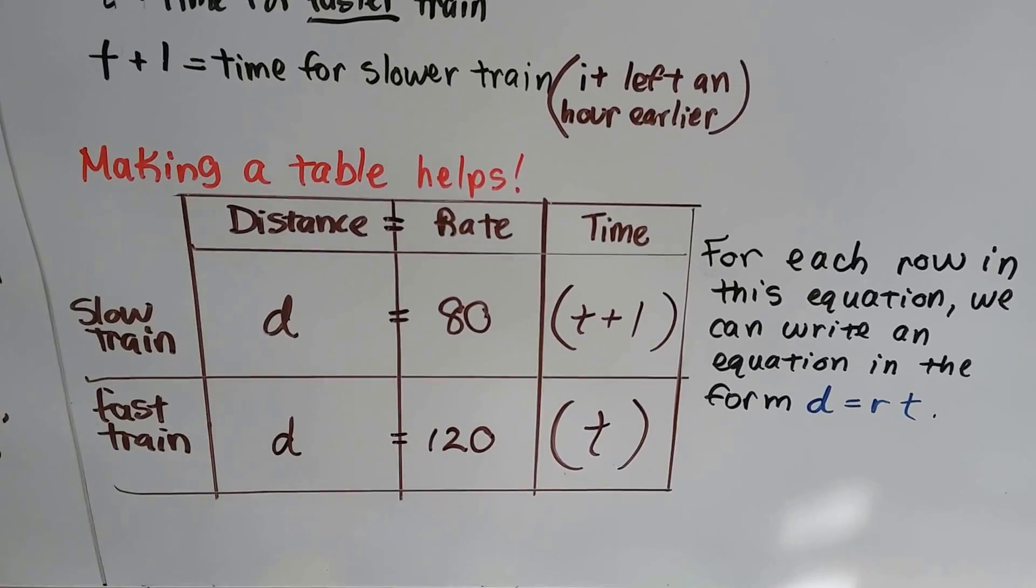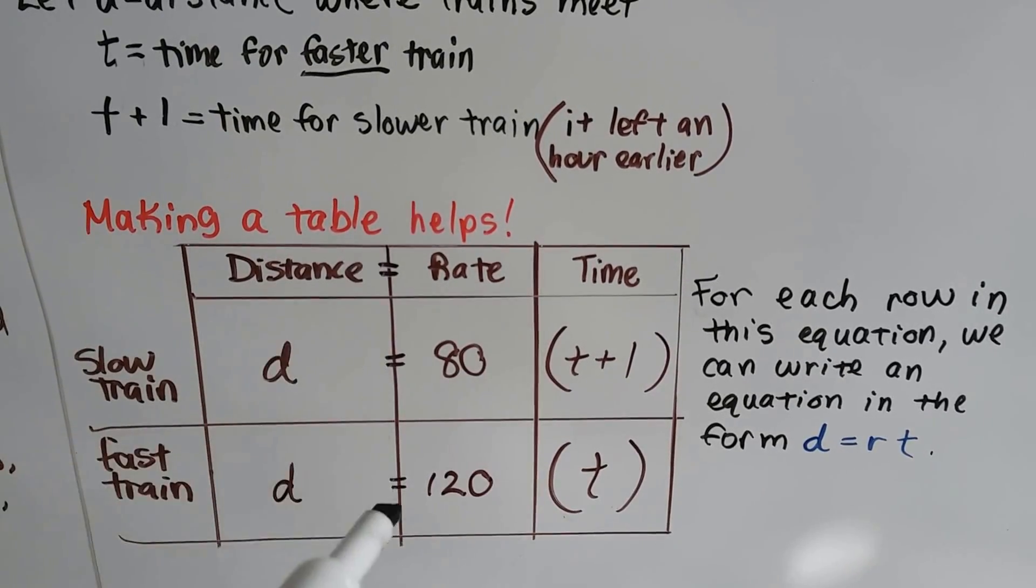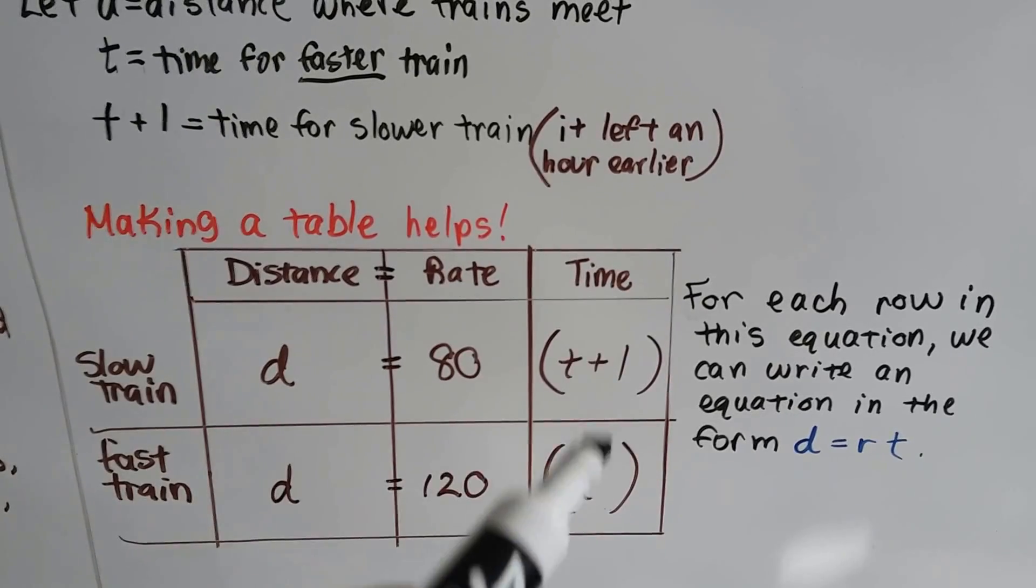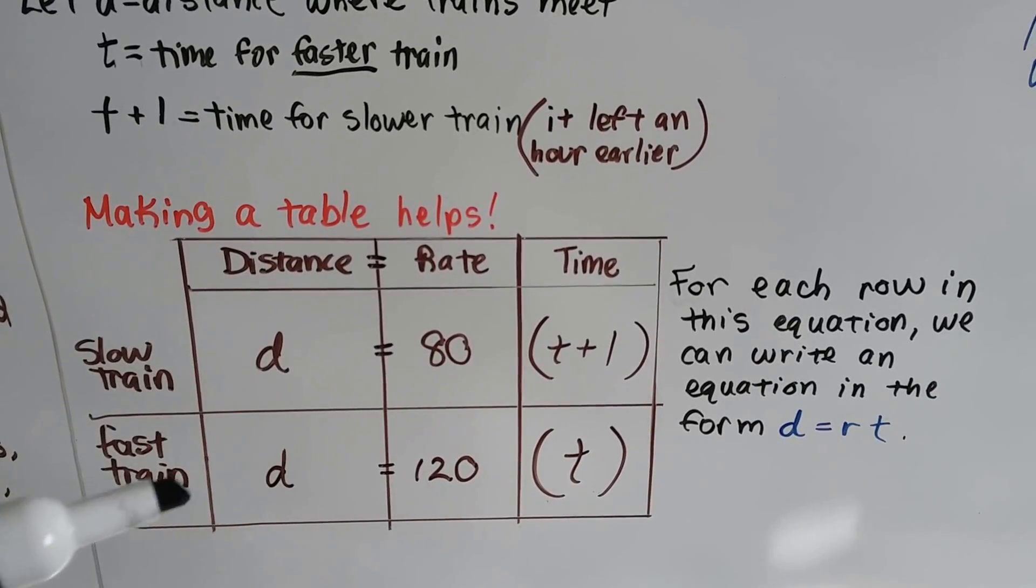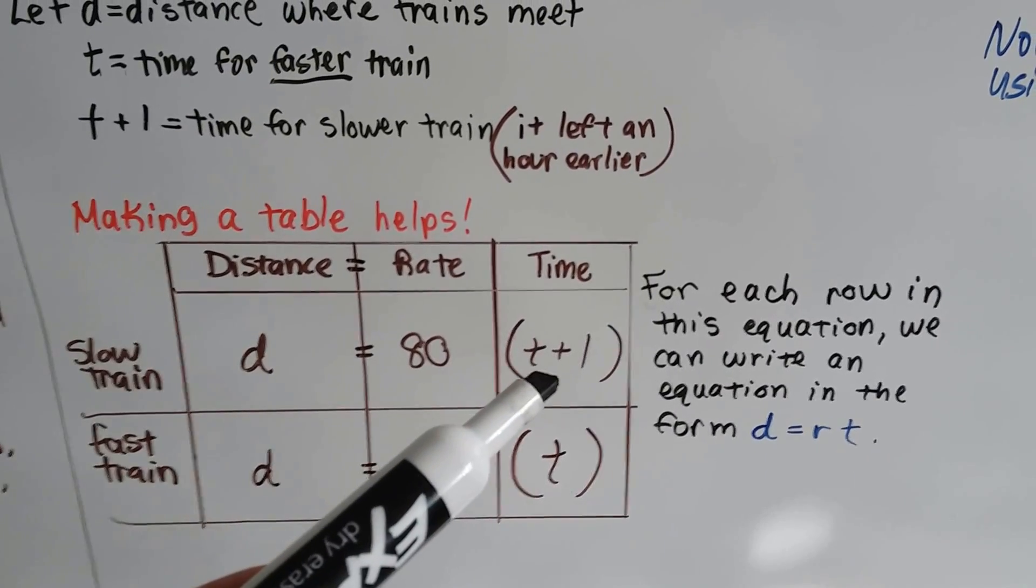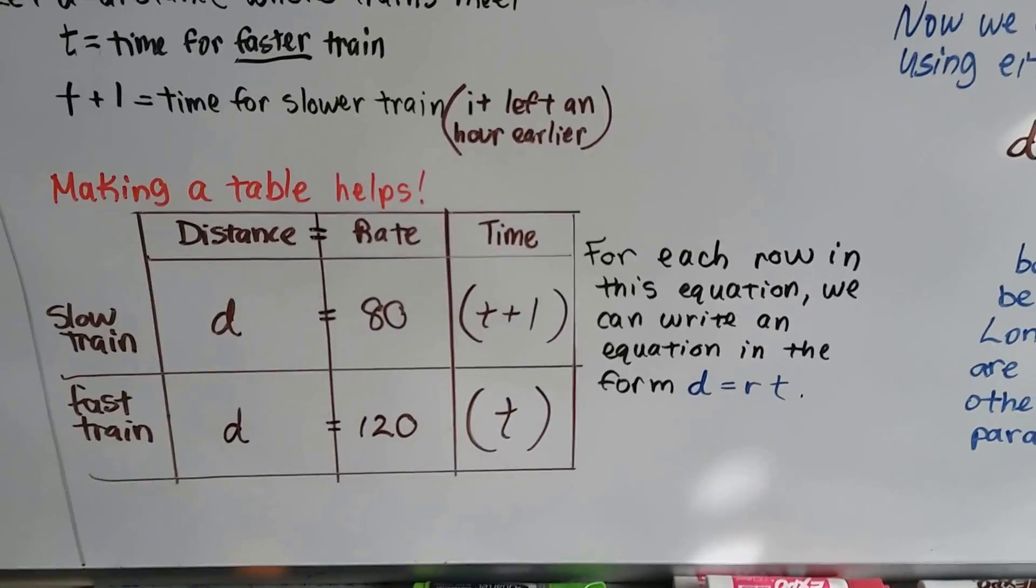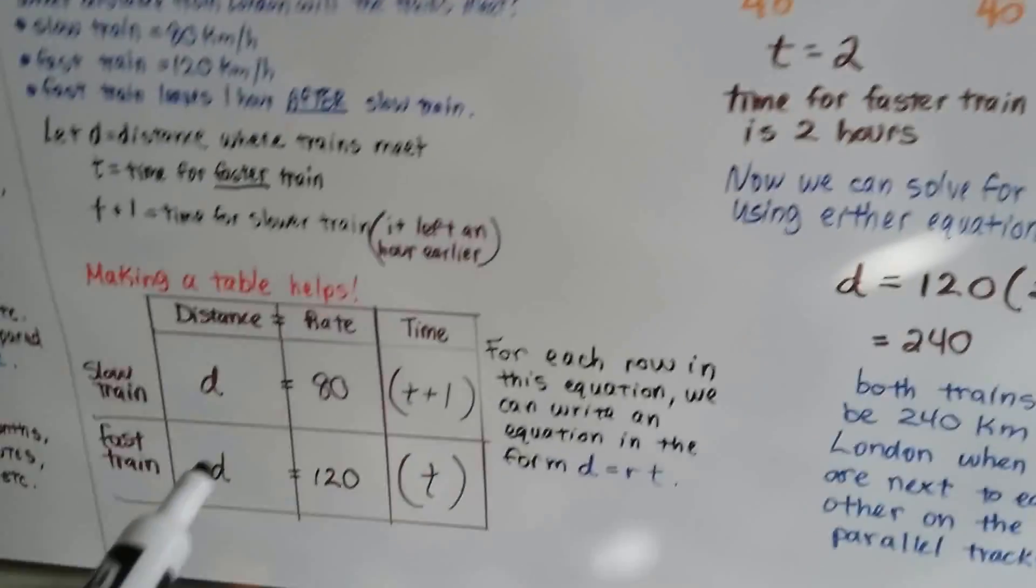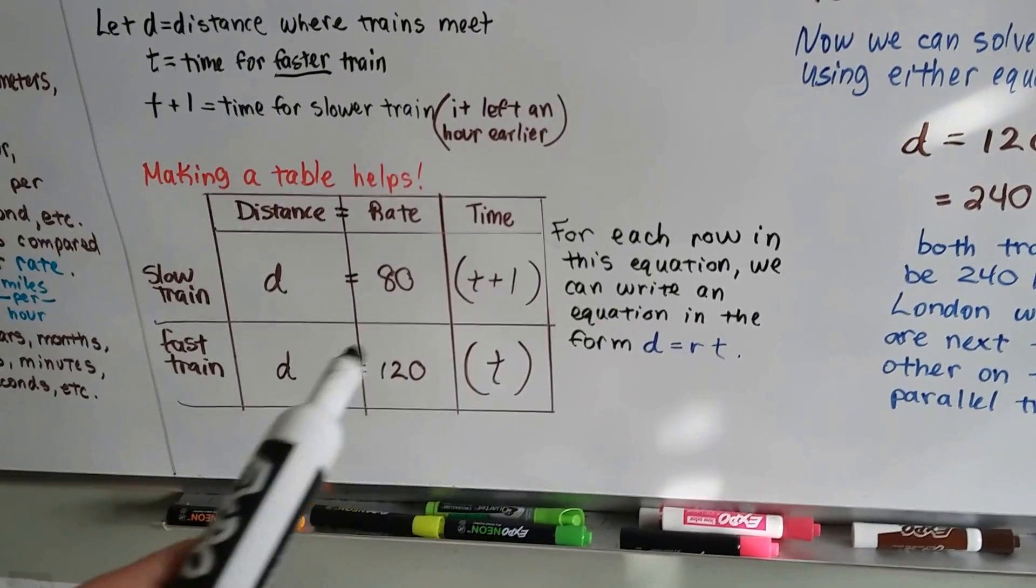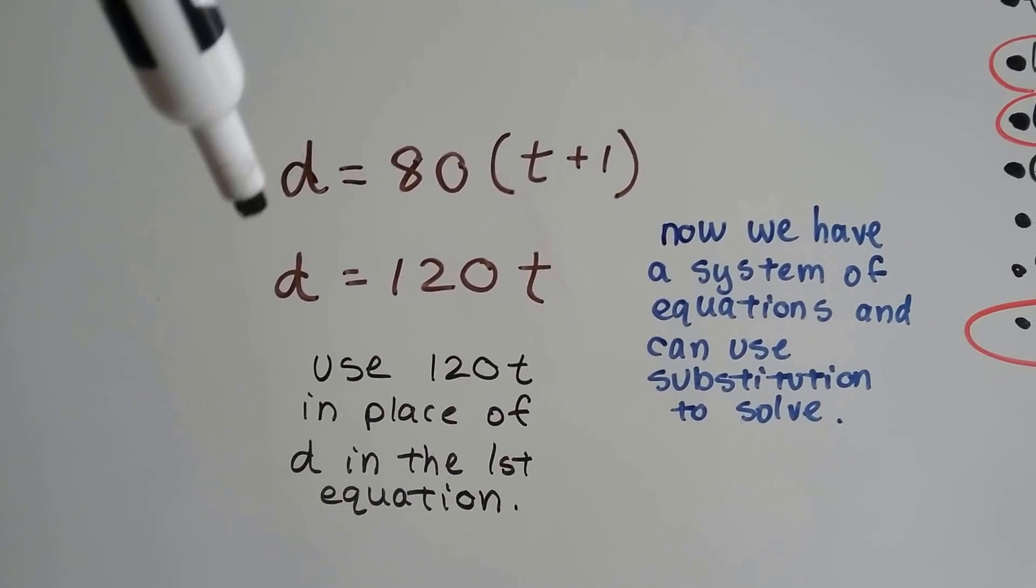Making a table helps. Distance equals rate times time. This is multiplication, this is an equal sign. For each row, slow train and fast train: the slow train's rate is 80, the fast train's rate is 120. The slow train's time is t plus one, the fast train's time is just t. We can write an equation in the form d equals rt for each row. We get d equals 80 times (t plus one) and d equals 120t.